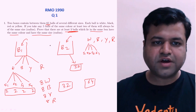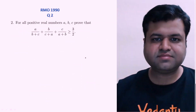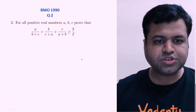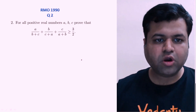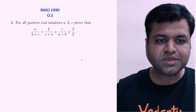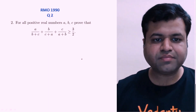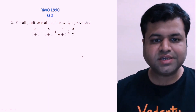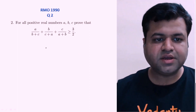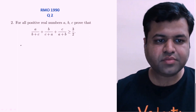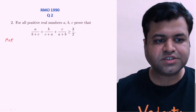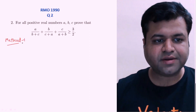So this was question 1 of RMO 1990. Now this is the second question of RMO 1990. In this question we need to prove that for all positive real numbers A, B, C: A/(B+C) + B/(C+A) + C/(A+B) is greater than or equal to 3/2. We will be doing this question by two methods.